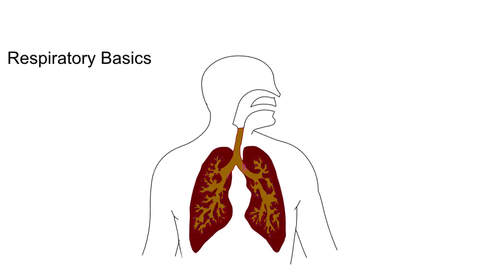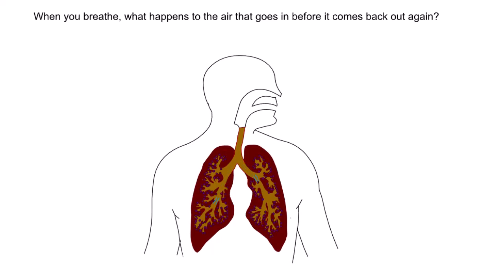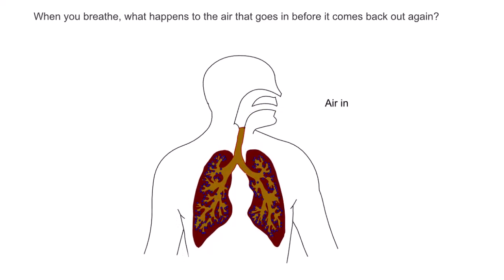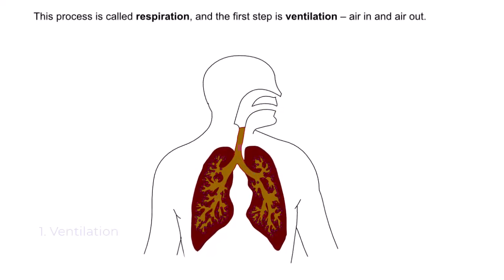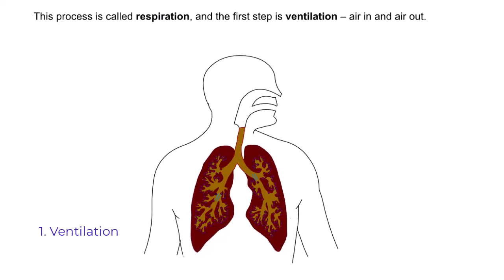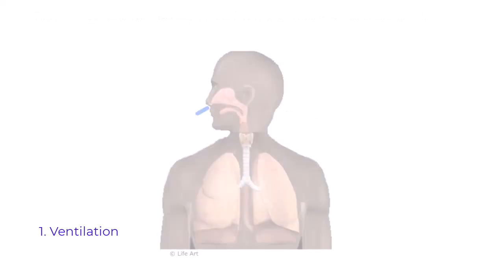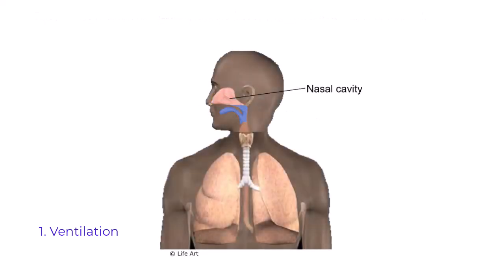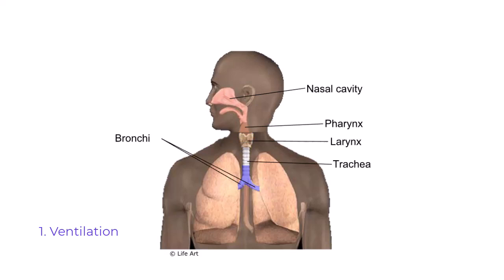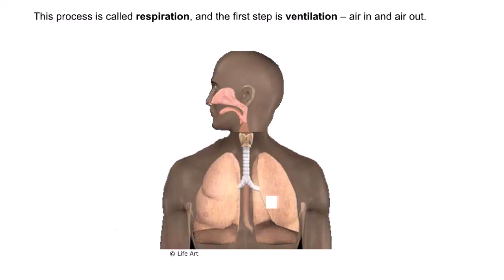Respiratory basics: when you breathe, what happens to the air that goes in before it comes back out again? The process is called respiration, and the first step is ventilation — air in and air out. When you breathe in, air travels past your nasal cavity, pharynx, larynx, trachea, and bronchi to the many tiny air sacs of the lungs, called alveoli.